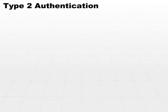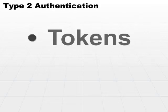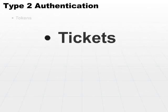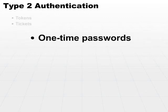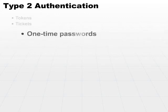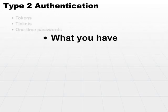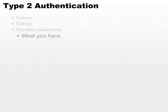Let's take a look at Type 2 authentication. Those include tokens, tickets, and one-time passwords. Type 2 is what you have — it's something that you would be carrying around. One example would be a token device, such as a smart card.